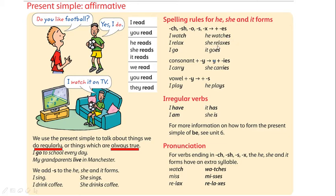Let's look at words ending with the letter Y. There are two situations. The first one: the word ends with letter Y, but before the Y we have a consonant. The second situation is when before the Y we have a vowel.